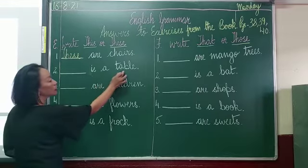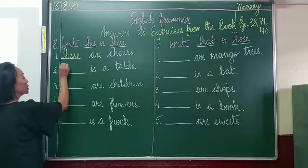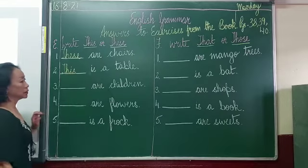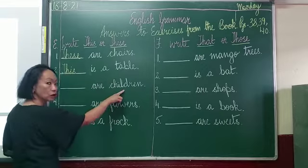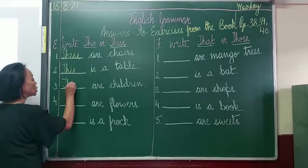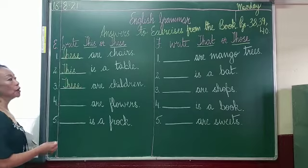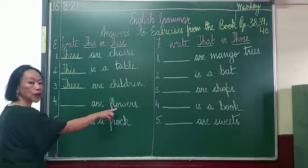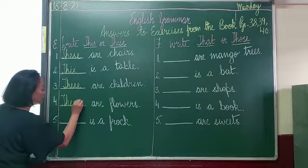Number two: 'dash is a table' — a table means one, so it will be 'this', capital T-H-I-S: this is a table. Number three: 'dash are children' — 'are' and 'children' are both more than one, so it will be 'these', capital T-H-E-S-E. Number four: 'dash are flowers' — 'are' and 'flowers' more than one, so these, capital T-H-E-S-E.